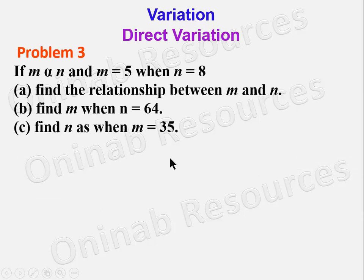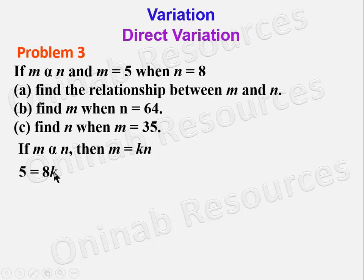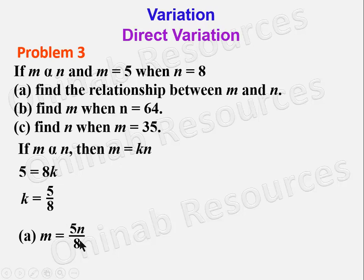We go to problem 3. If M varies directly as N and M is equal to 5 when N is 8, find K. We have 5 equal to 8K, so K is equal to 5 over 8, dividing both sides by 8. We then find the relationship between M and N by substituting K: M is equal to 5N over 8.